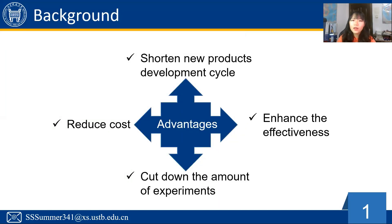It is capable of predicting steel properties before smelting. By setting proper parameters, it can shorten the new products development cycle, enhance effectiveness, cut down the amount of experiments, and reduce cost.